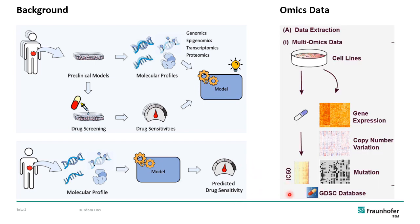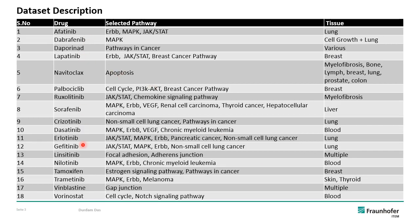The data we use is mainly the omics data from the GDSC database. This is a large-scale pharmacogenomic study in which thousands of cancer cell lines are screened with hundreds of anti-cancer drugs. We use three types of data including gene expression, CNV, and mutation, and the main measurement of drug response in our study is IC50. We have taken 18 drugs for this study including targeted as well as chemotherapies, targeting different tissue types of cancer and various cancer signaling pathways.